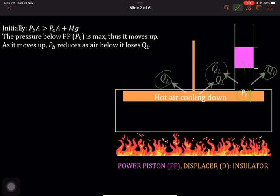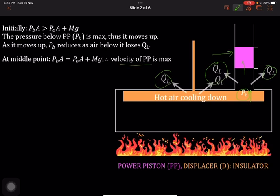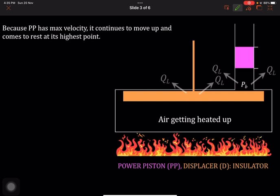When this reaches middle position, its velocity is max because the upward force and the downward force on the piston balance. During this process, once again heat is being released to the atmosphere. Because this piston has maximum velocity, it will continue to move up and reach its highest point.